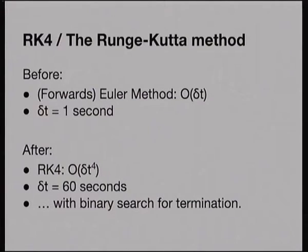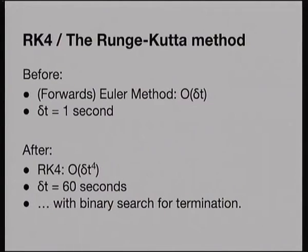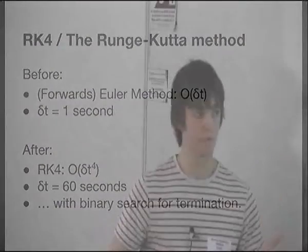RK4 is a magic algorithm that does so much better that we can set the time step to 60 seconds, get better accuracy, and it'll run so much faster. So much faster that the tightest inner loop — the bit that does the actual prediction — written in C using the Euler method is the same speed as the RK4 method written in Python using Cython to speed it up.